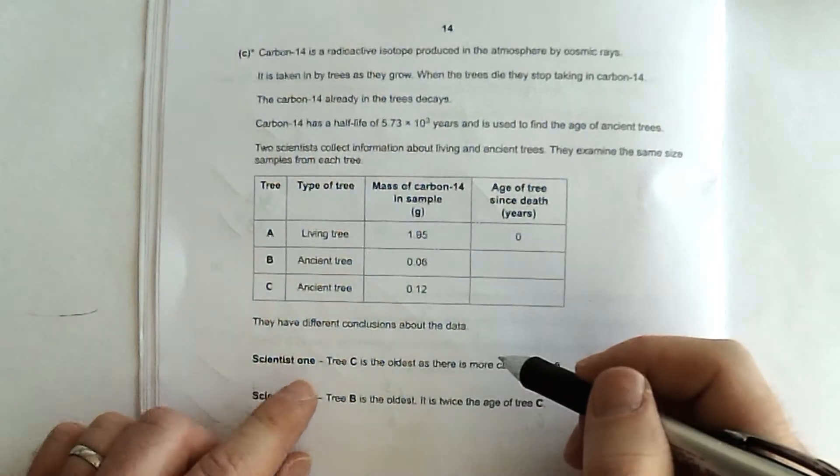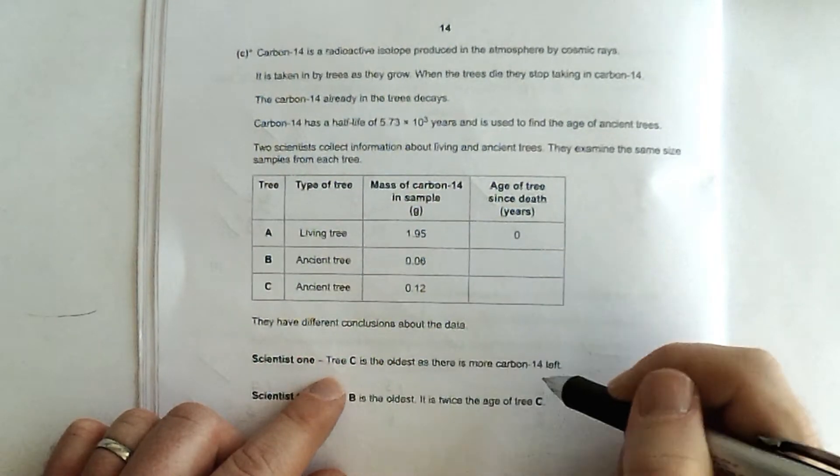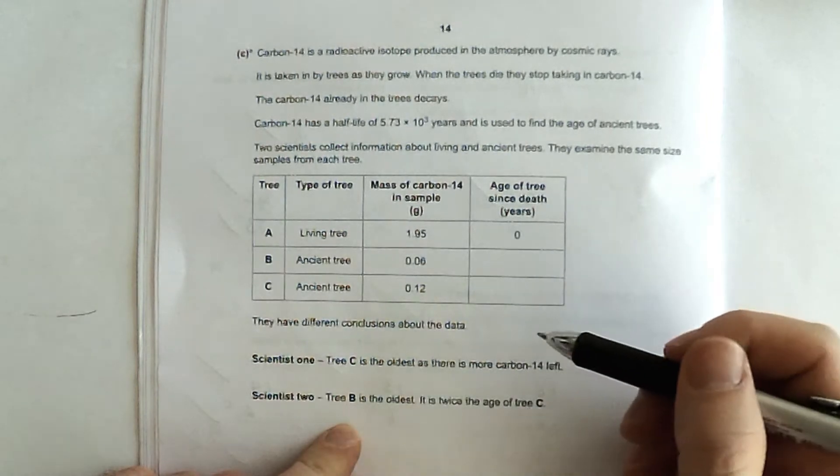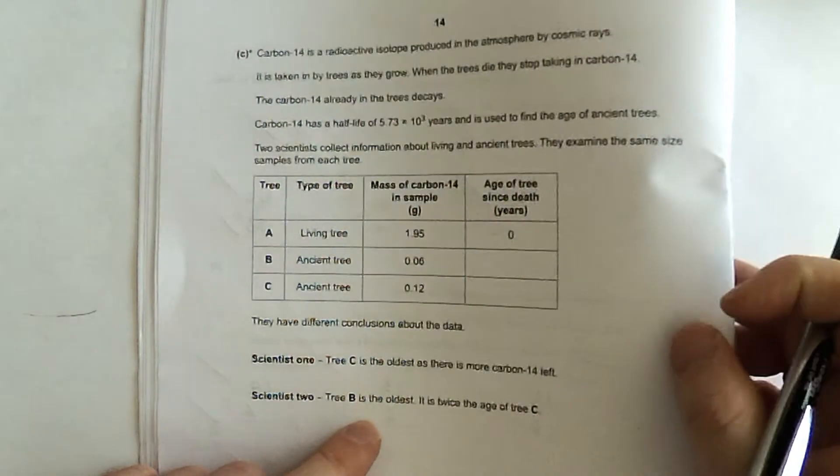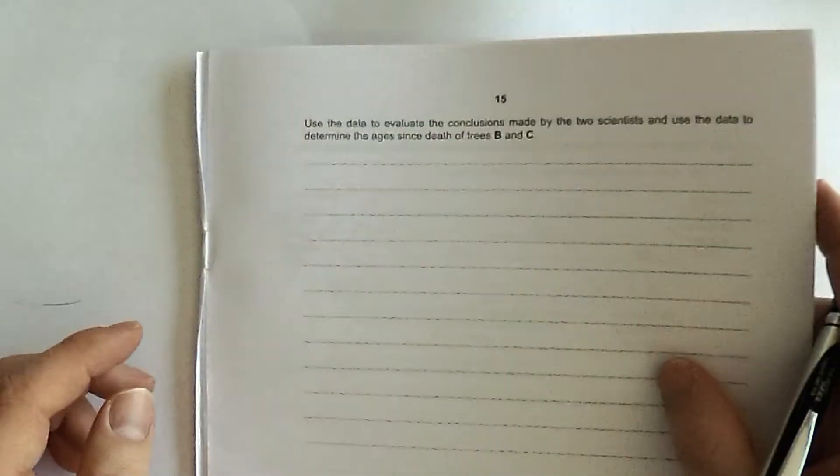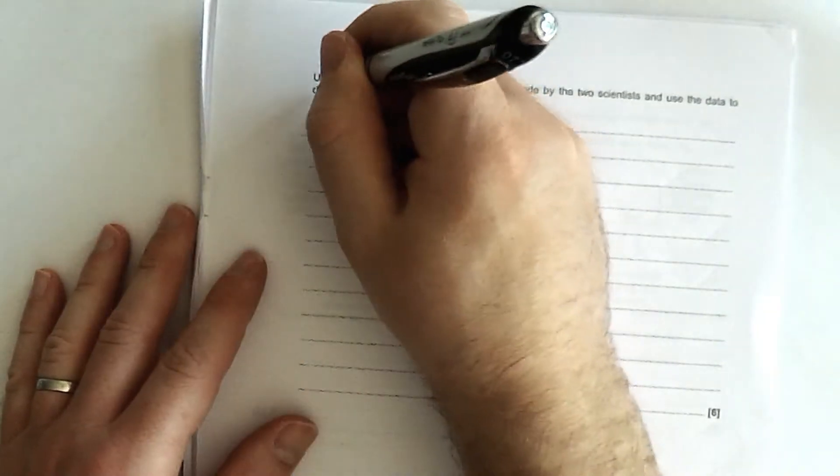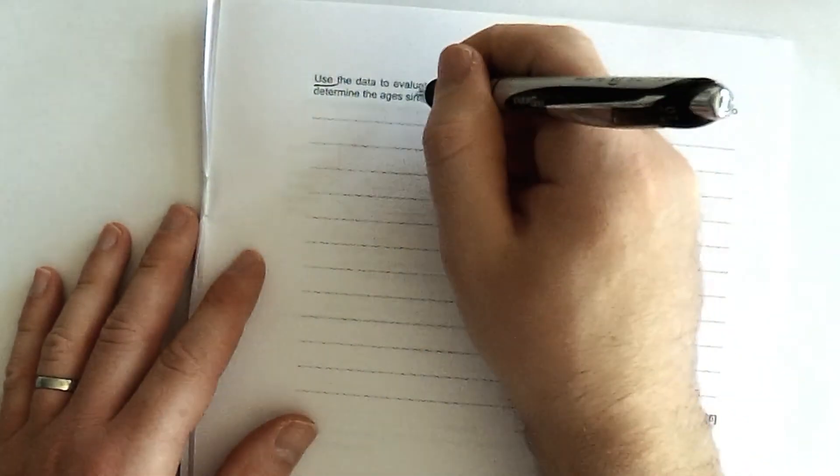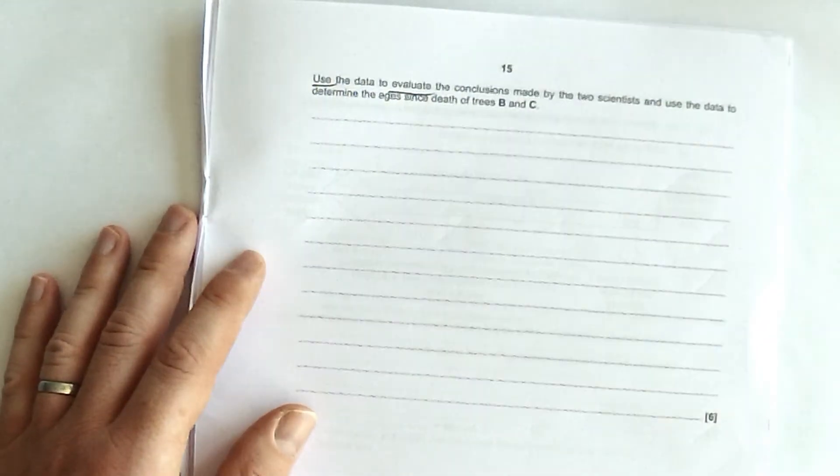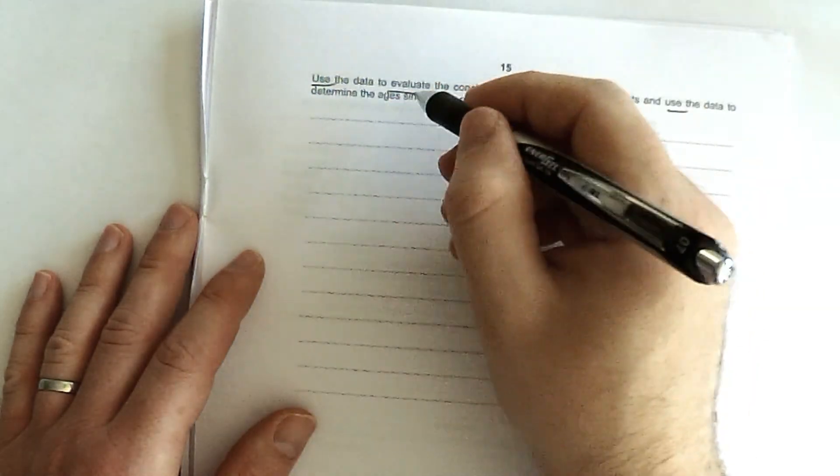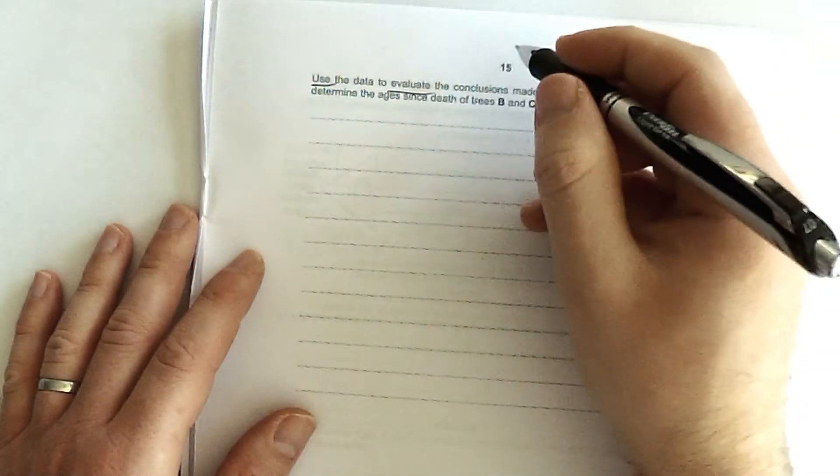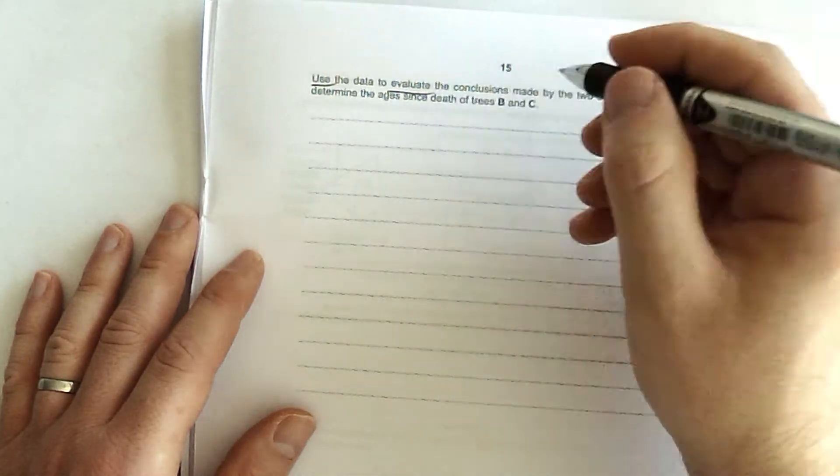So in how many grams of carbon-14 in the same size sample? 1.95, and it's living, so it's not dead. This is an ancient tree, and it's got less carbon-14. It's got much less, actually. This is another ancient tree, and it's got less, but not as less as B. They have different conclusions about the data. So scientist 1 says tree C is the oldest, as there's more carbon-14 left, and scientist 2 says tree B is the oldest, and they actually say it's twice the age of tree C. This is the question, then.